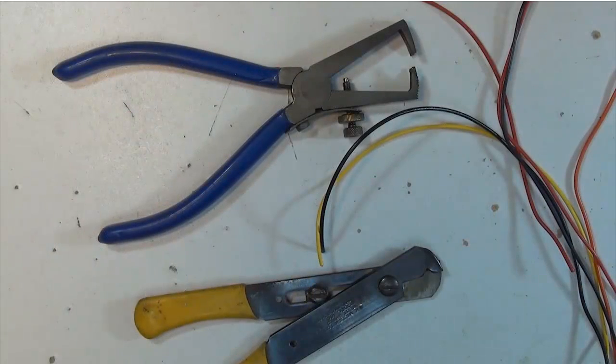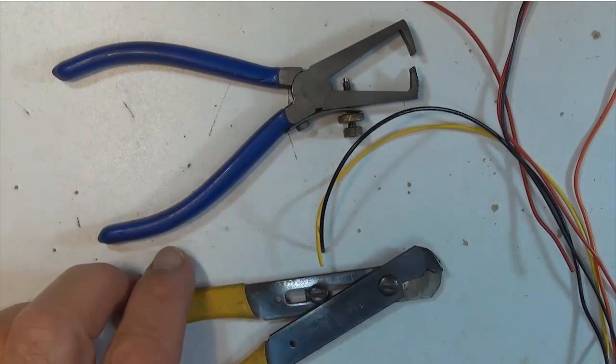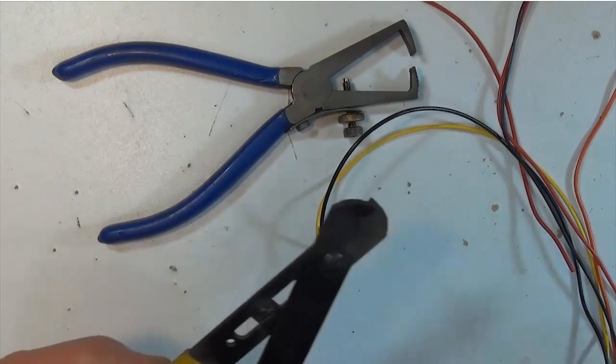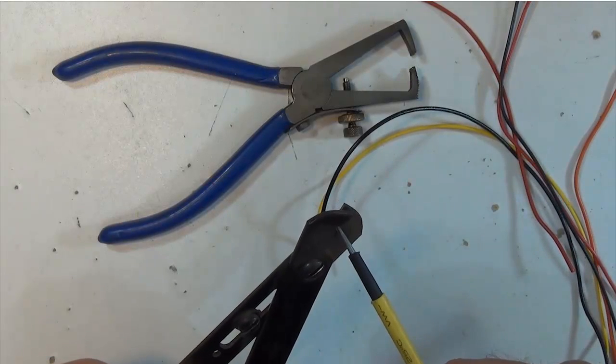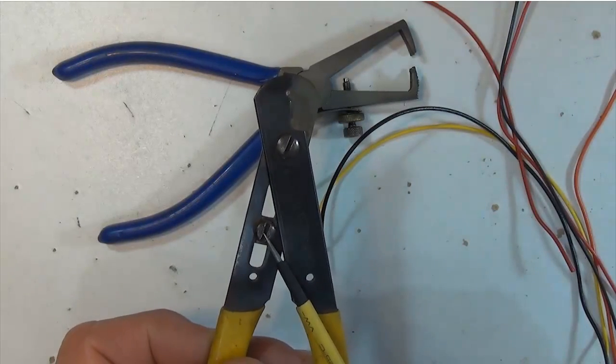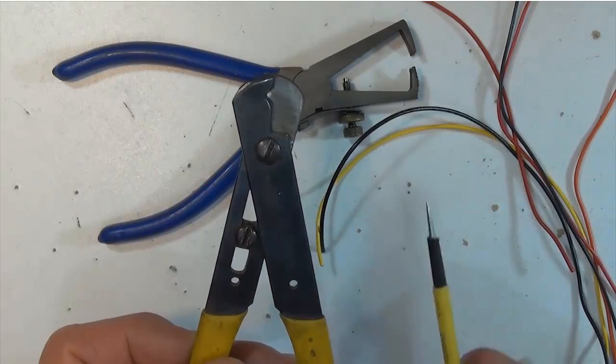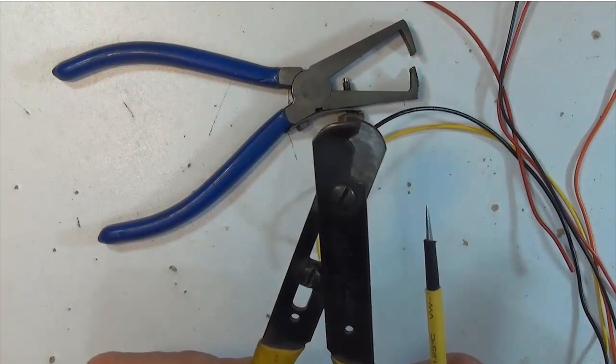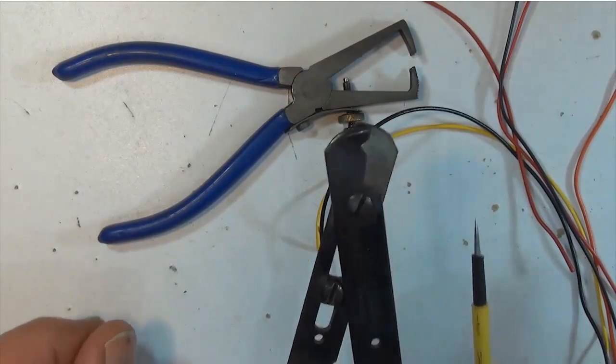Here are two manual type wire strippers. You have to set the opening in the jaw to the wire gauge that you're going to be stripping, and to do that you would adjust this little screw and do a couple sample runs with the wire. This works pretty good.